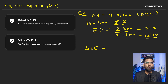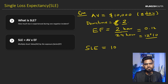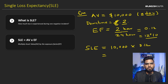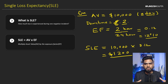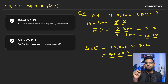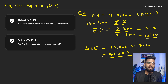Now the SLE — Single Loss Expectancy — is calculated as Asset Value multiplied by the Exposure Factor. That's $10,000 times 0.12, which equals $1,200. So the Single Loss Expectancy is $1,200 — that is the amount of loss we can expect from any single incident. If an incident happens, we can expect at least $1,200 in loss.